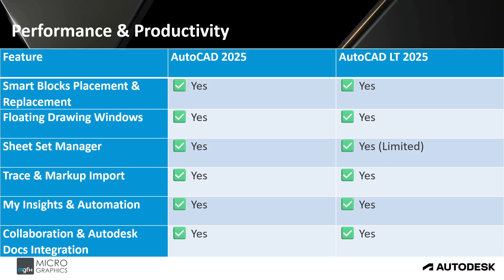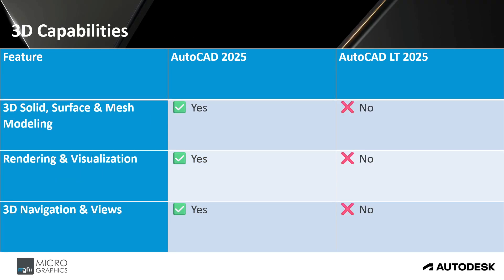On performance and productivity: smart block placement and replacement, floating drawings, sheet set manager, trace and markup imports, My Insights and automation, and collaboration and Autodesk Docs integration are available in both. However, the sheet set manager is limited in AutoCAD LT and does not have full functionality as in the full version. Similarly, the collaboration features are available in both, but AutoCAD LT has its limitations.